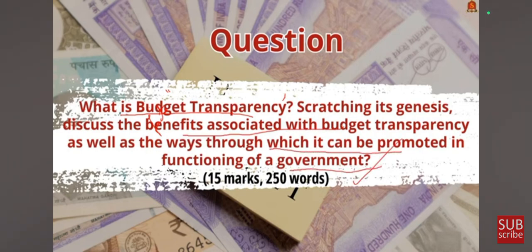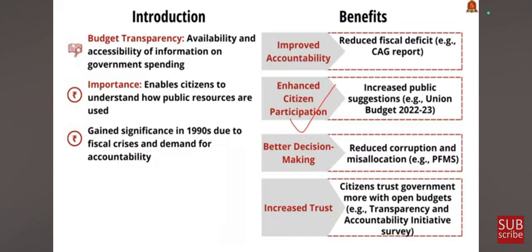In the introduction, you can write that budget transparency — a vital aspect of good governance — refers to the availability and accessibility of information on government financial activities, enabling citizens to understand how public resources are allocated, utilized, and managed. The concept gained significance in the 1990s as countries faced fiscal crises and citizens demanded greater accountability. The IMF and the World Bank championed budget transparency as a key reform in the 1990s. India too embraced this concept, with the Union Budget 2017–18 being a landmark moment as it introduced the first-ever budget transparency and accountability report.